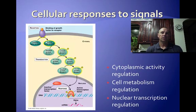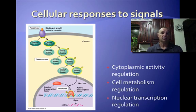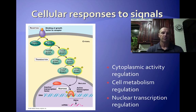Finally, after you get a transduction, you have the cellular response. The cellular response can be a lot of different things — cytoplasmic activity can be regulated this way, cell metabolism can be regulated this way, and nuclear transcription — the copying of DNA — can be regulated this way. After this cascade of responses during your transduction phase, you actually get your cellular response. All right, I know that was fast and furious, but that's basically cell communication in a nutshell. I hope that helps you — I'll see you tomorrow.